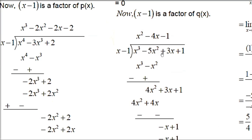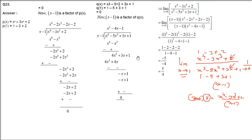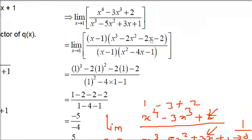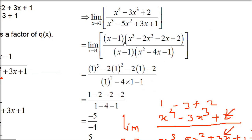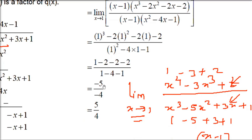After dividing, in the numerator we get (x-1)(x³ - 2x² - 2x - 2), and in the denominator we get (x-1)(x² - 4x - 1). The x minus 1 factors cancel. Now put x as 1 in what remains, and you get 5 by 4 as the answer. Just eliminate x minus 1, which was creating the indeterminate form.